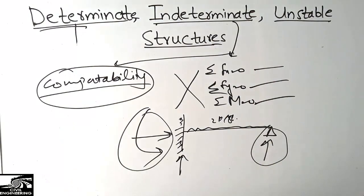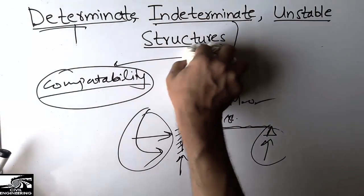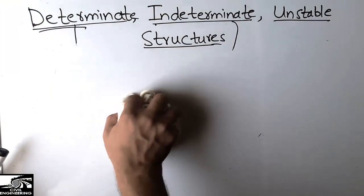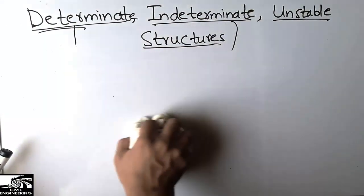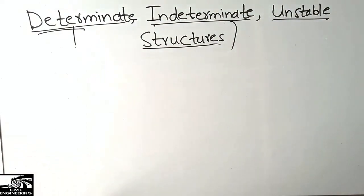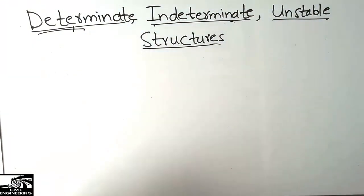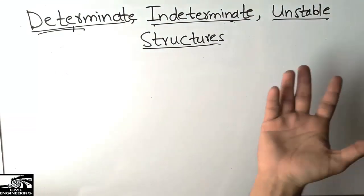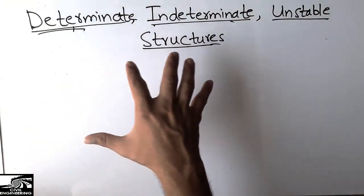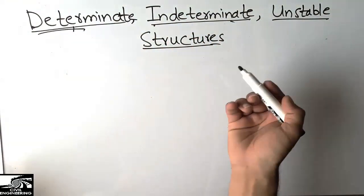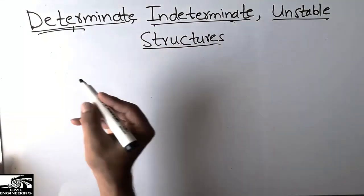Now coming to unstable structures: these are structures which are not going to support the applied load and will fail upon loading. We call such structures unstable. There are formulas to determine whether a structure is determinate, indeterminate, or unstable.